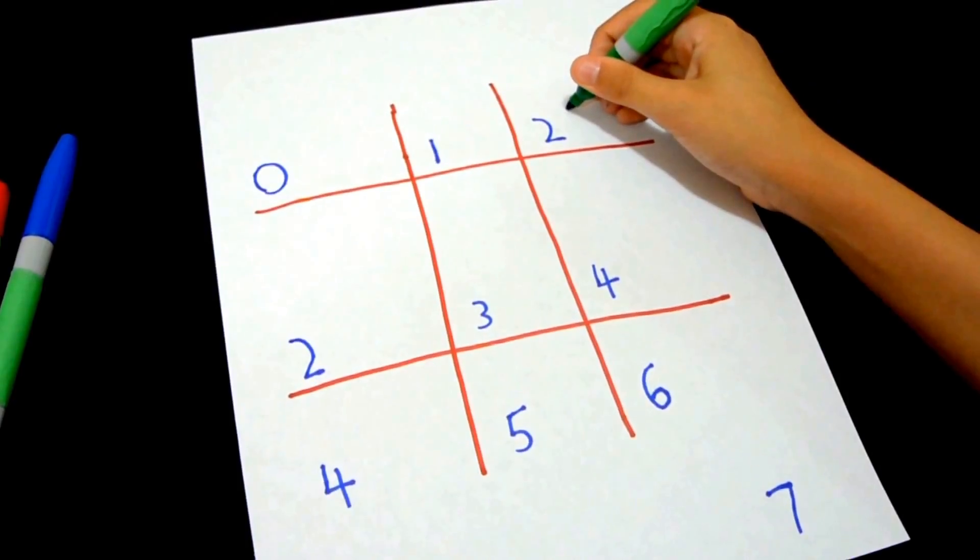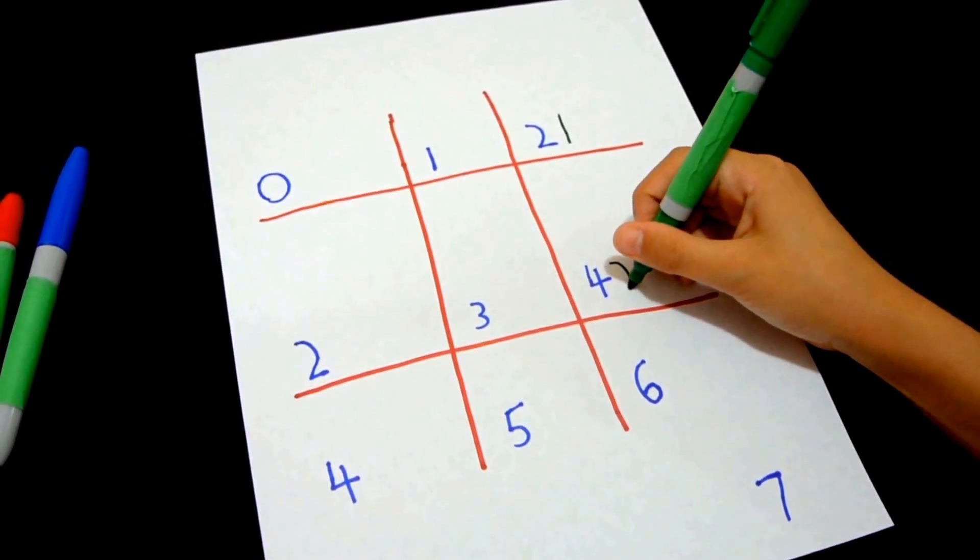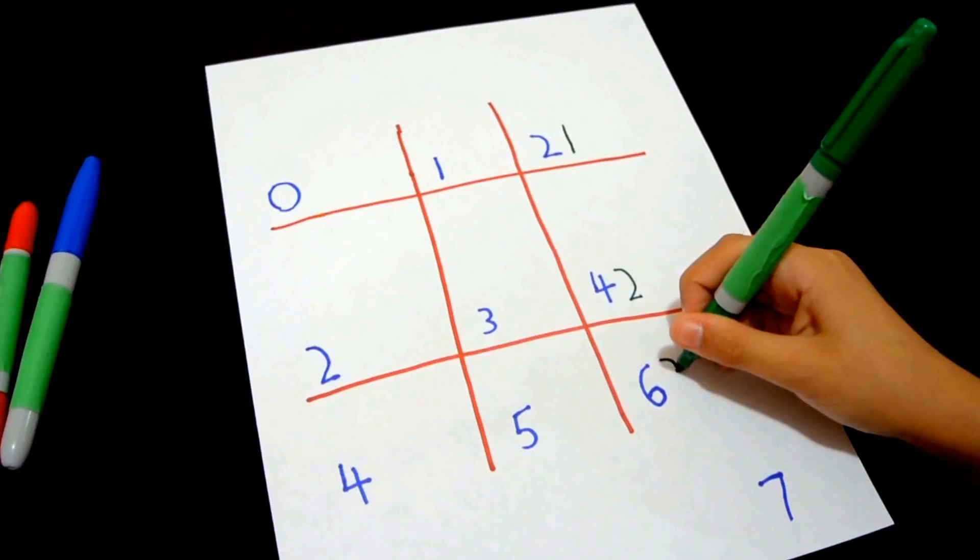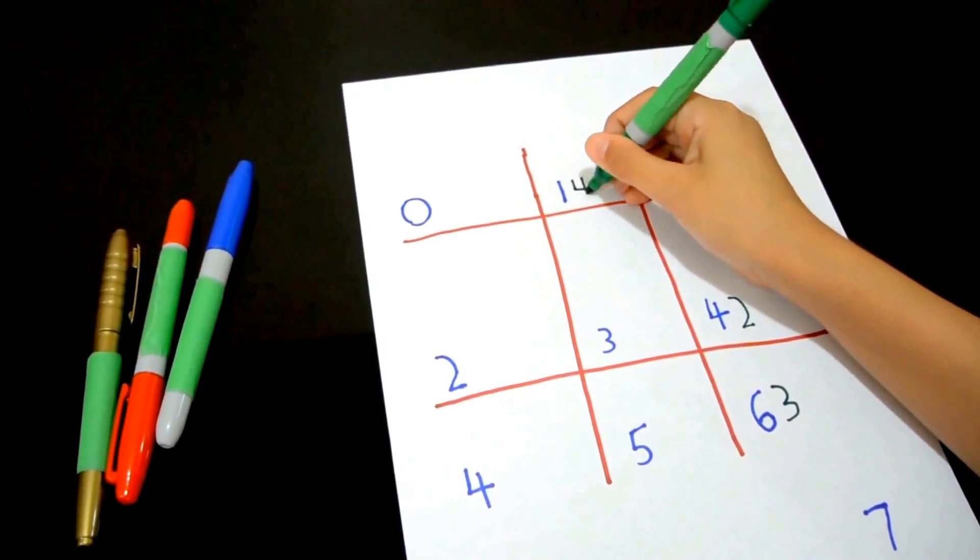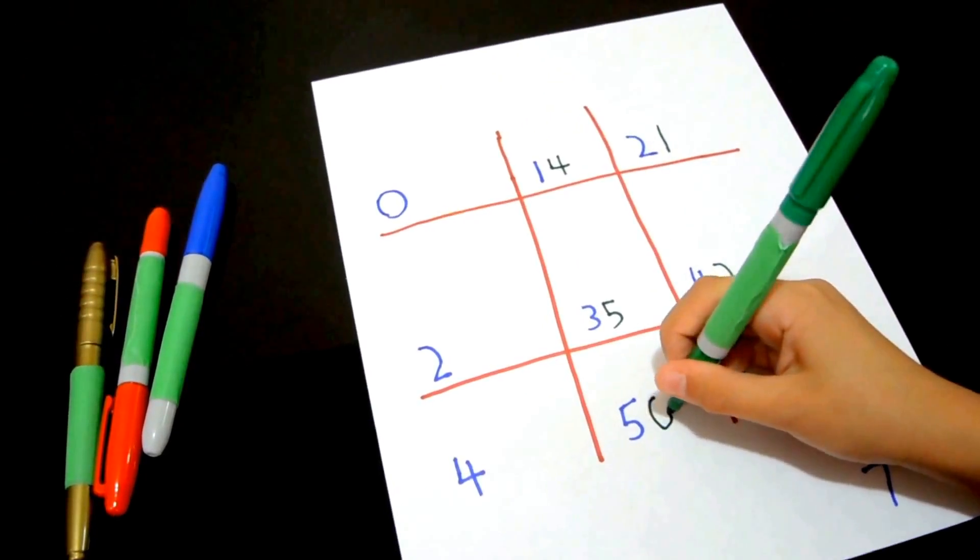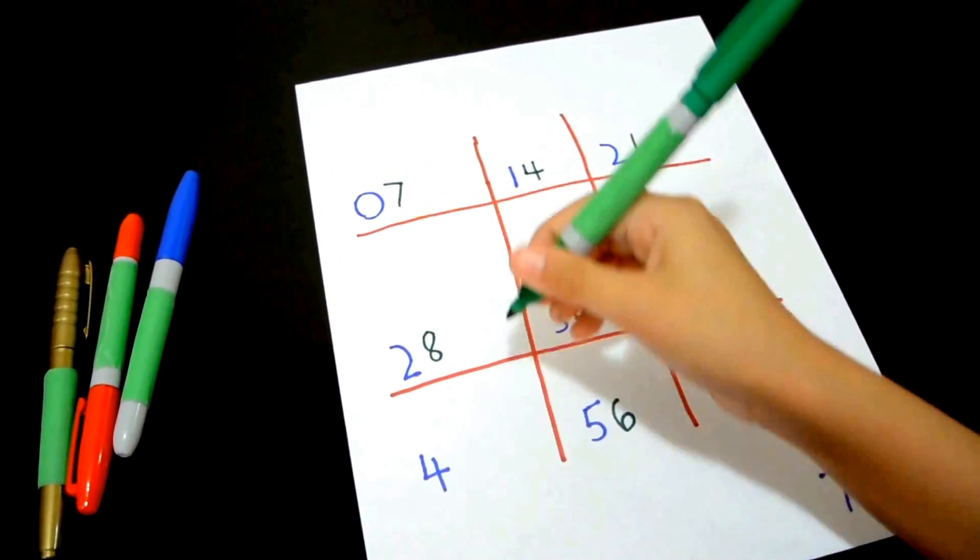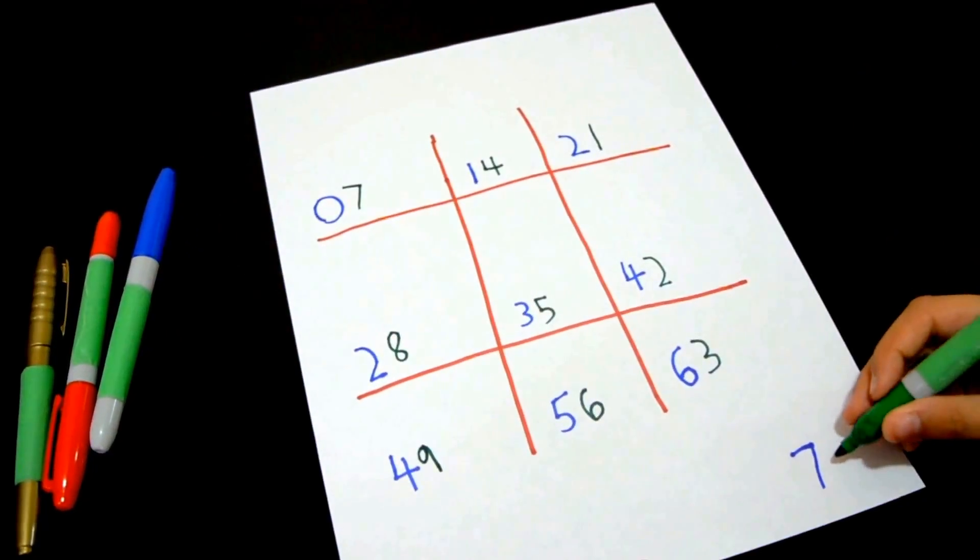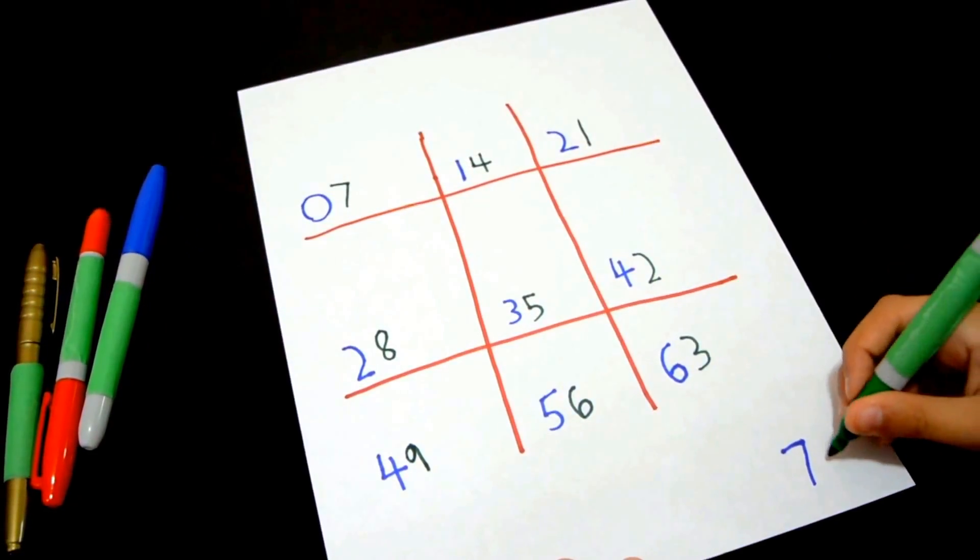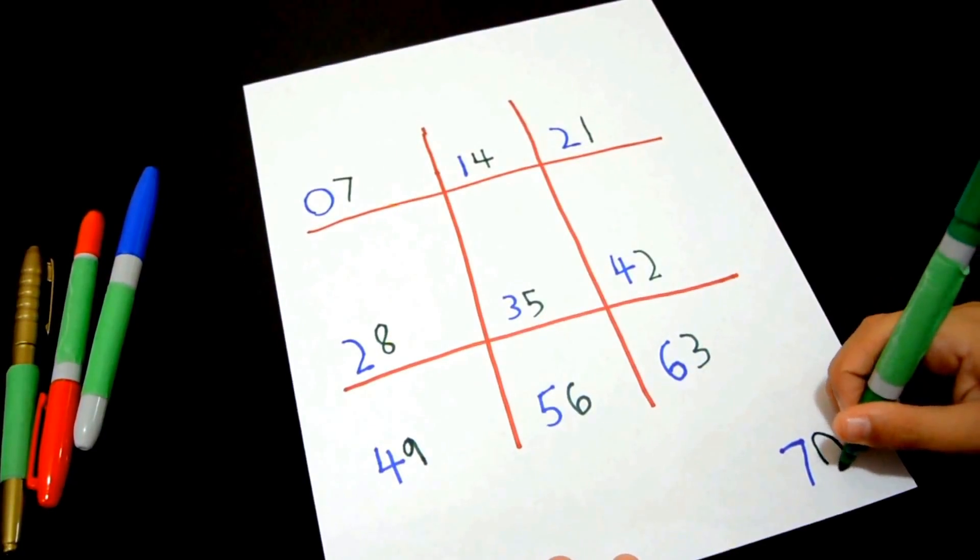So, 1, 2, 3. Also, put a 0 here, right next to the 7.